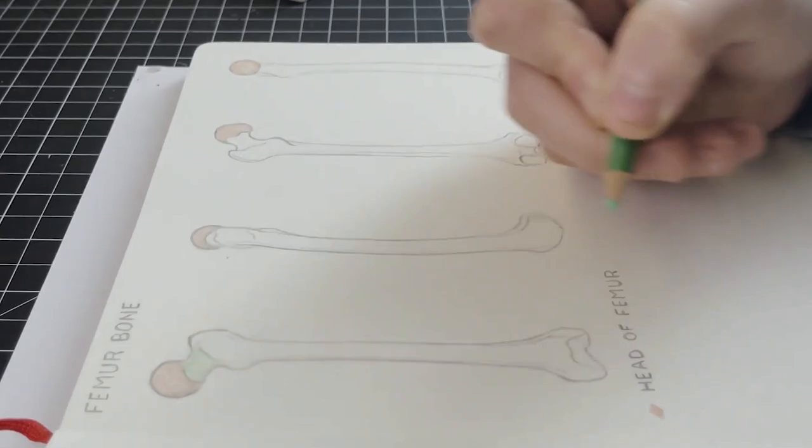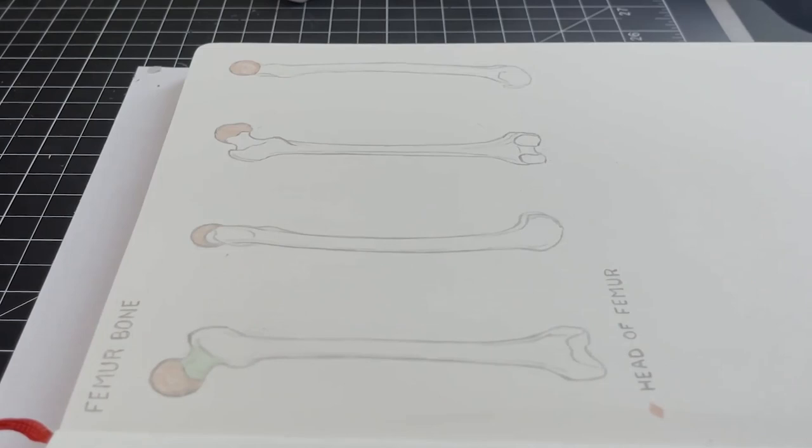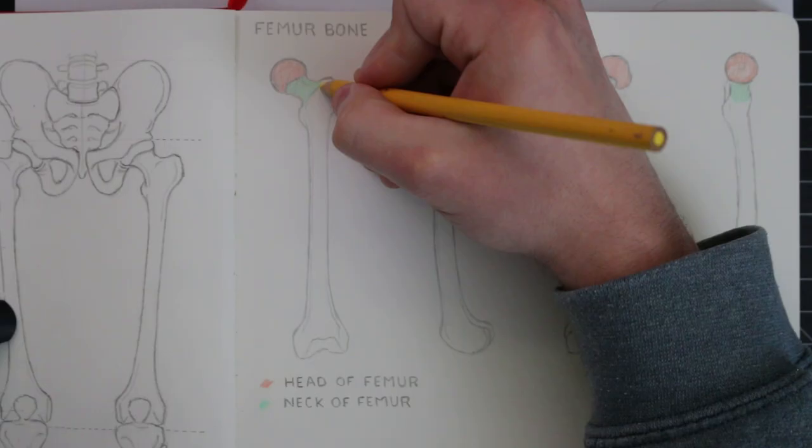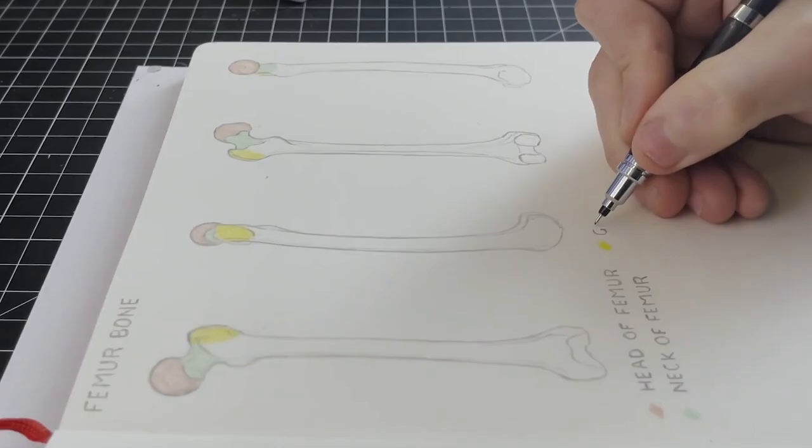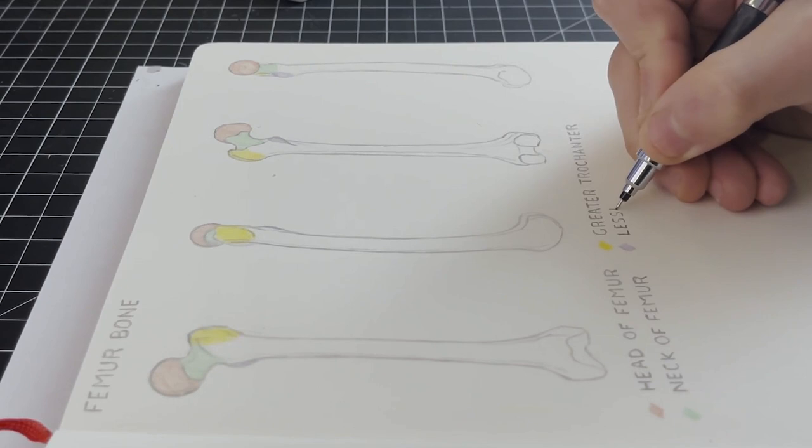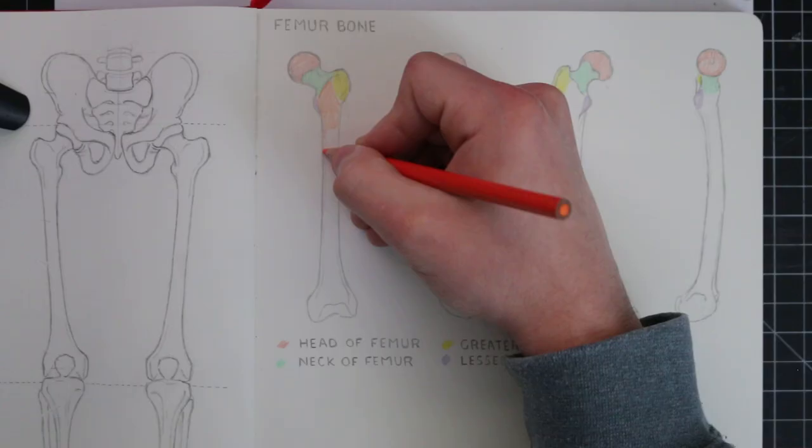There is the neck of the femur, the part between the body and the head. This here is on an angle and this is on a greater angle in females than males. We'll be covering the anatomical differences in a later video. There is the greater trochanter, the section that protrudes out on the exterior of the neck. Close to this is the lesser trochanter, this is a smaller protrusion on the interior of the neck.